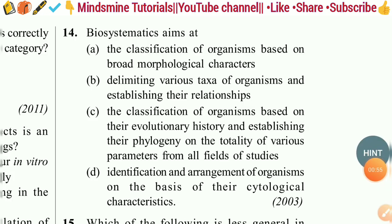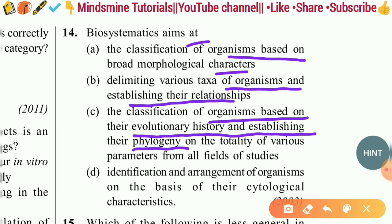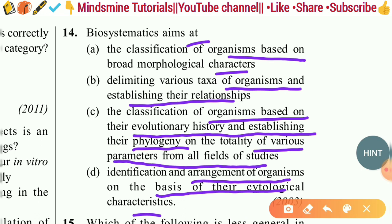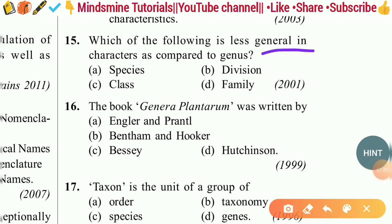Question fourteen: Biosystematics aims at — classification of organisms based on broad morphological characters; delimiting various taxa and establishing their relationships; the classification of organisms based on their evolutionary history and establishing their phylogeny on the totality of various parameters from all fields of studies; or identification based on cytological characteristics. The right answer is option C — classification based on evolutionary history and phylogeny on the totality of various parameters.